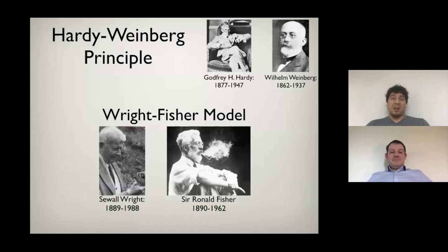We're going to think about this in the context of some classical ideas, such as the Hardy-Weinberg Principle. We'll study the assumptions within the Hardy-Weinberg Principle and what happens when we violate those assumptions. We're going to think about simulations using the Wright-Fisher model, and we're going to see what happens when we make different assumptions about the evolutionary model with regard to the output of the simulations and the patterns of genetic variation.